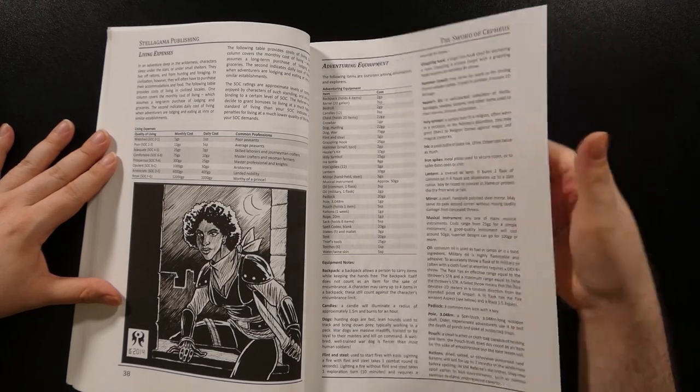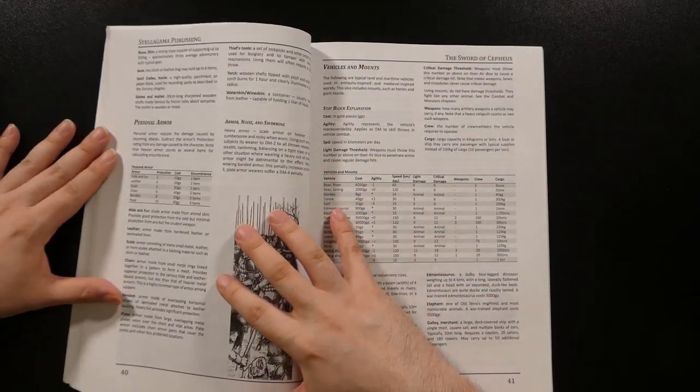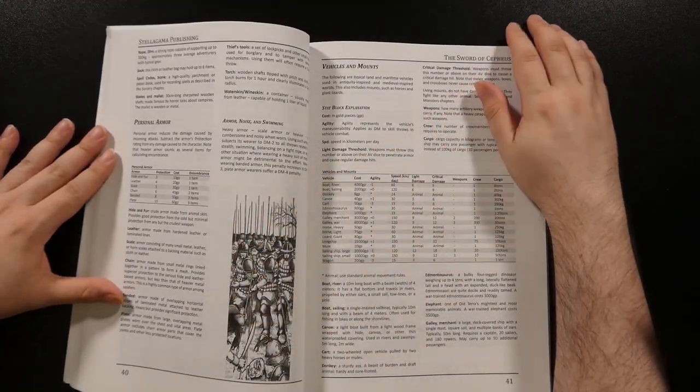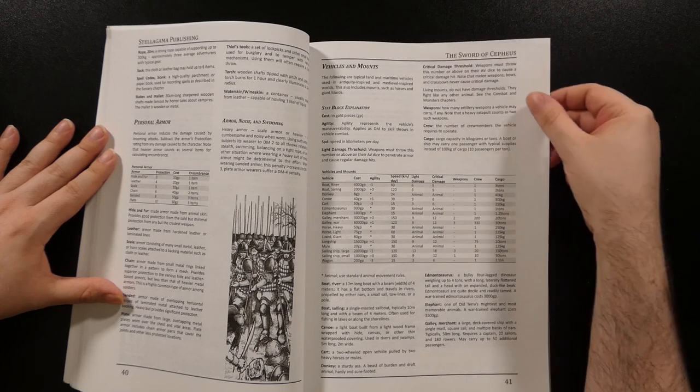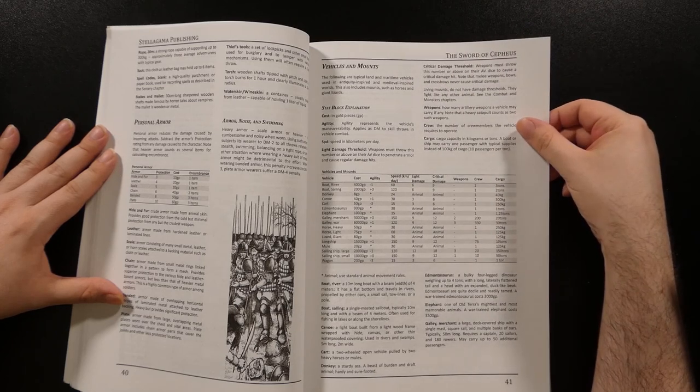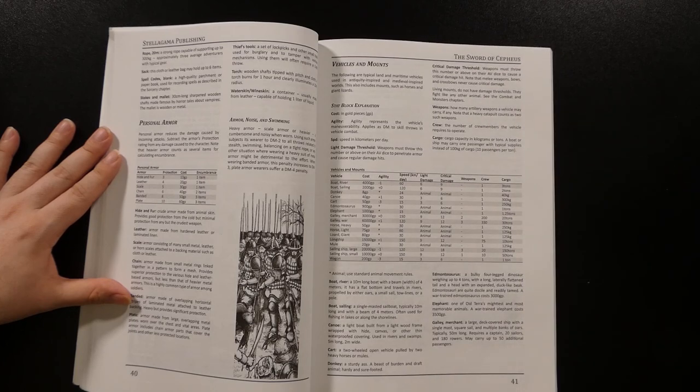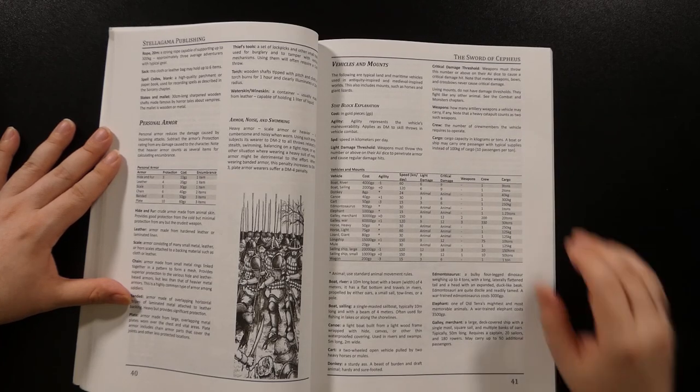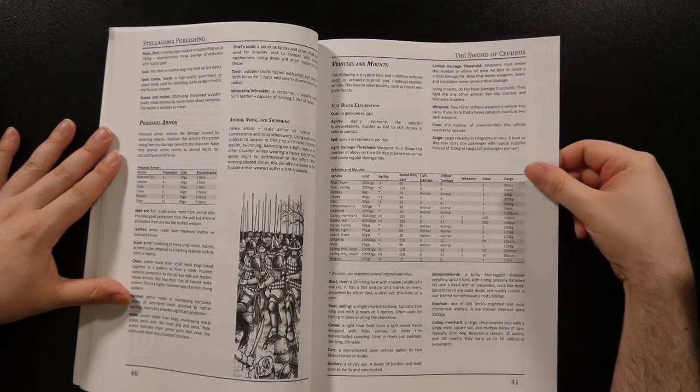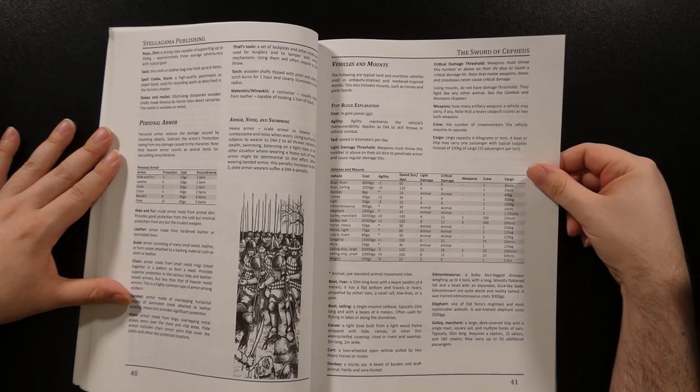Personal armor is noted then, which includes basic rules for how various sorts of armor make noise and impact swimming and other athletic feats. Vehicles and mount description and costs follow this, as well as a table that offers necessary information such as speed, cargo, and what sorts of damage each particular vehicle can sustain.